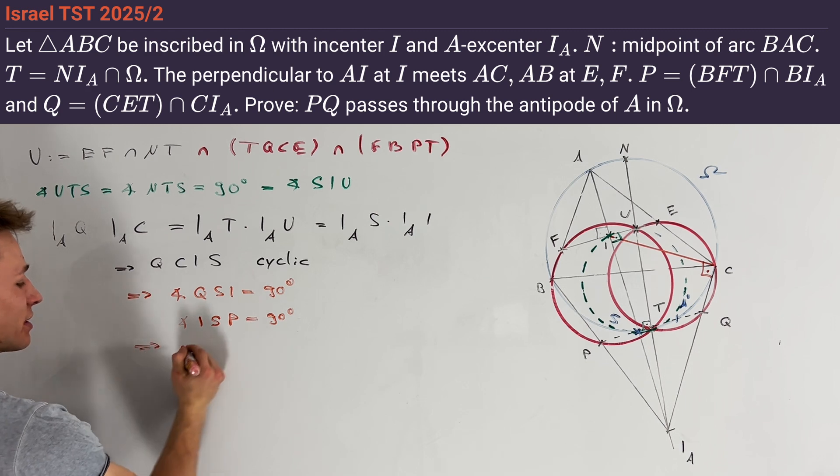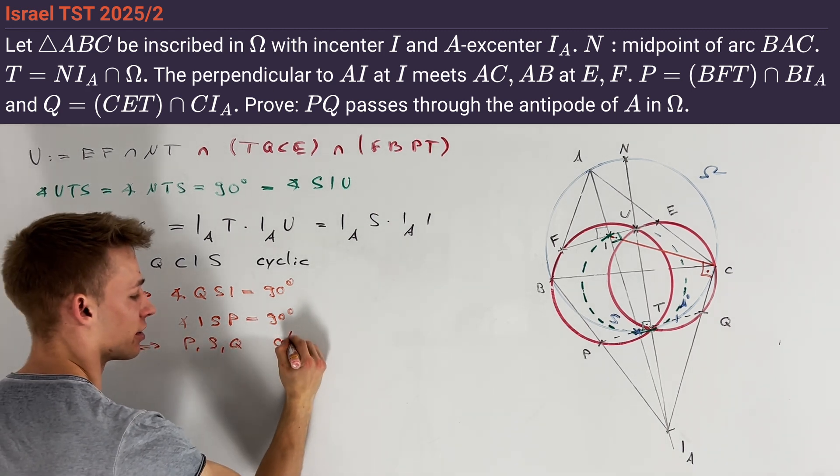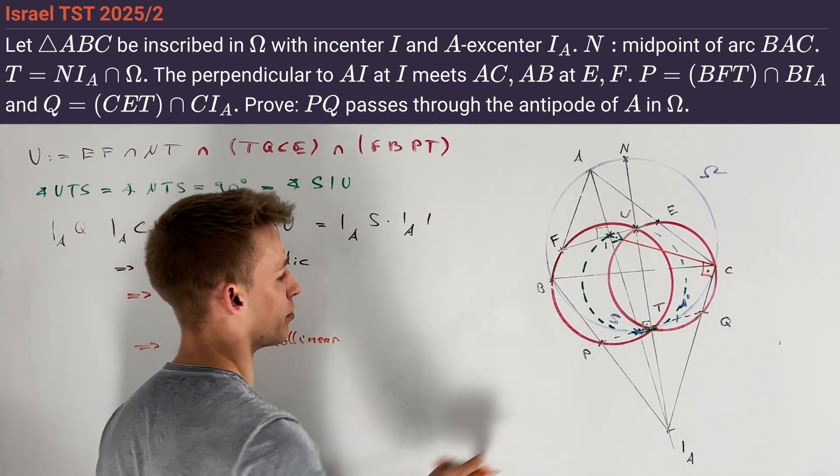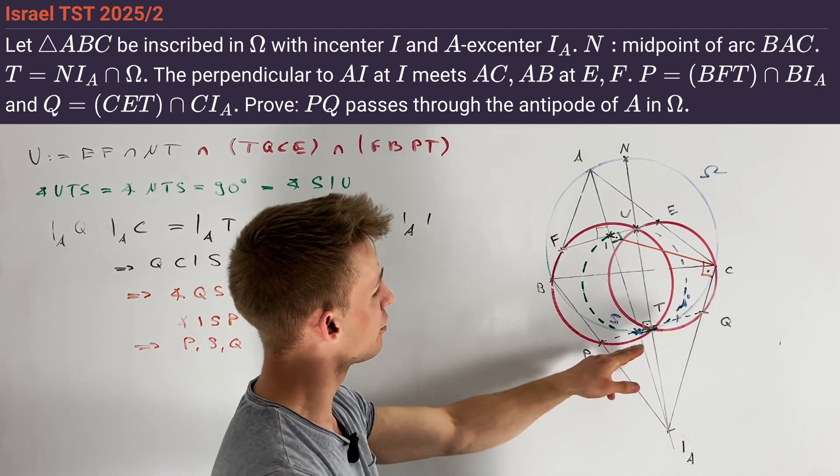In other words, the points P, S, and Q are collinear, and the line AI is perpendicular to PQ. Hence, S is one of the intersections of PQ with Ω.